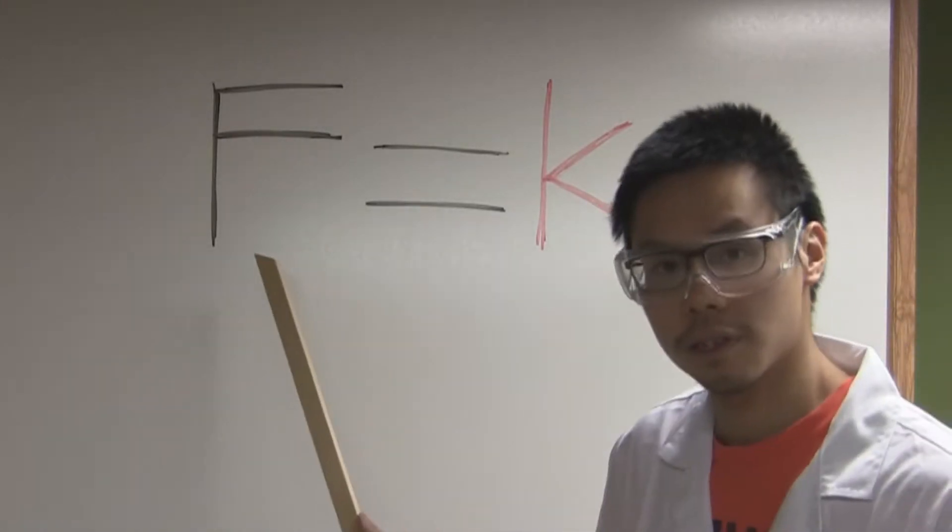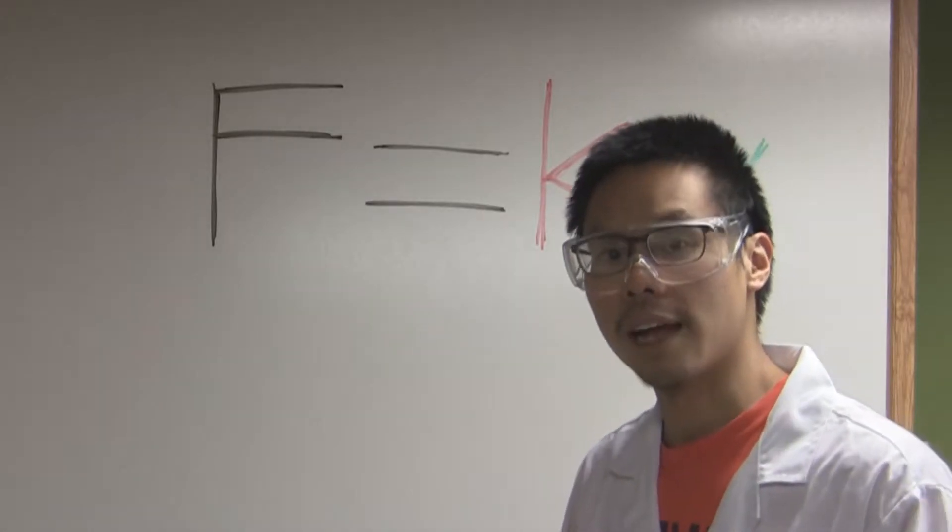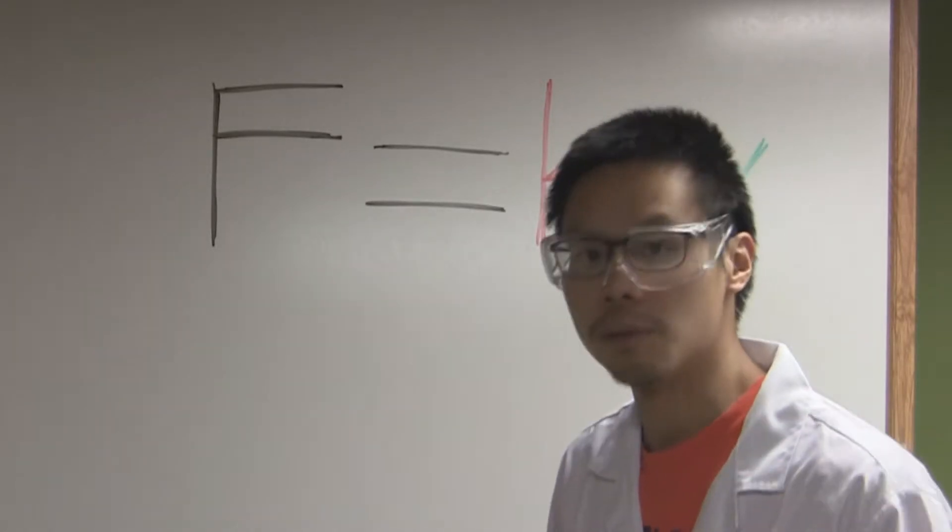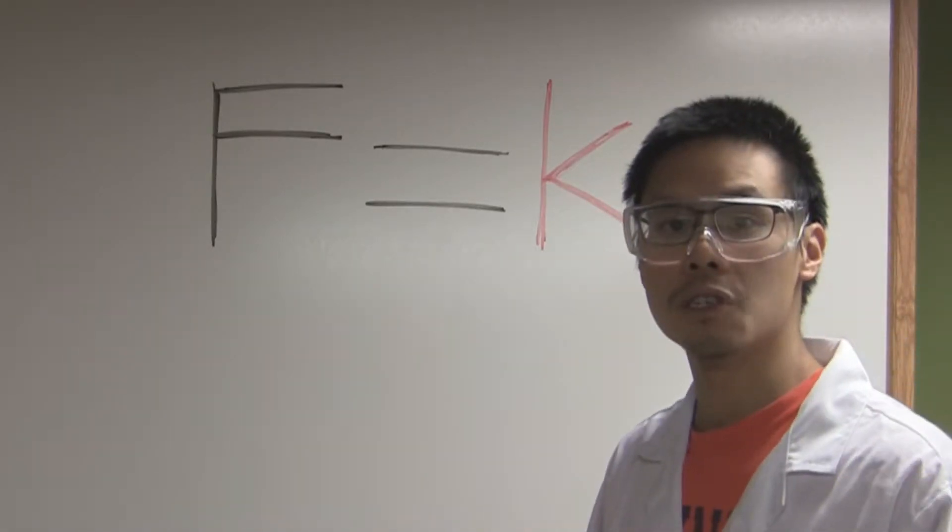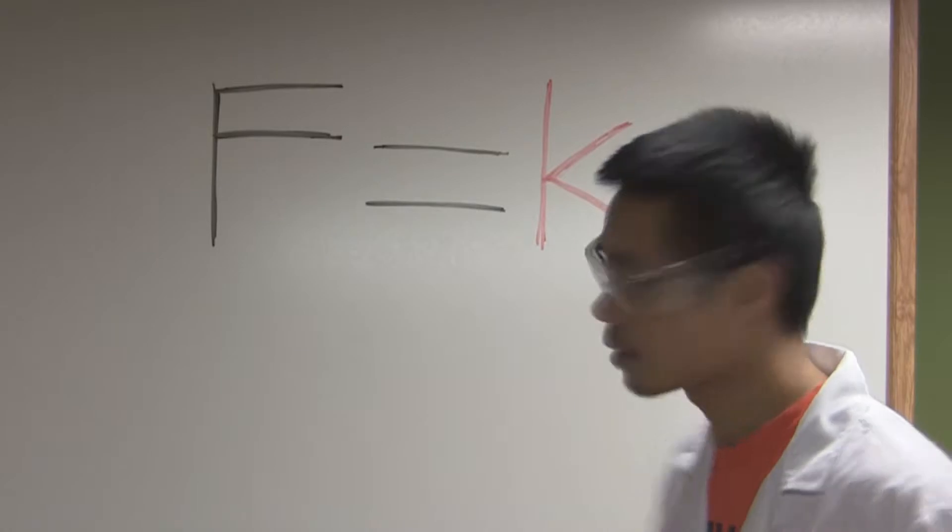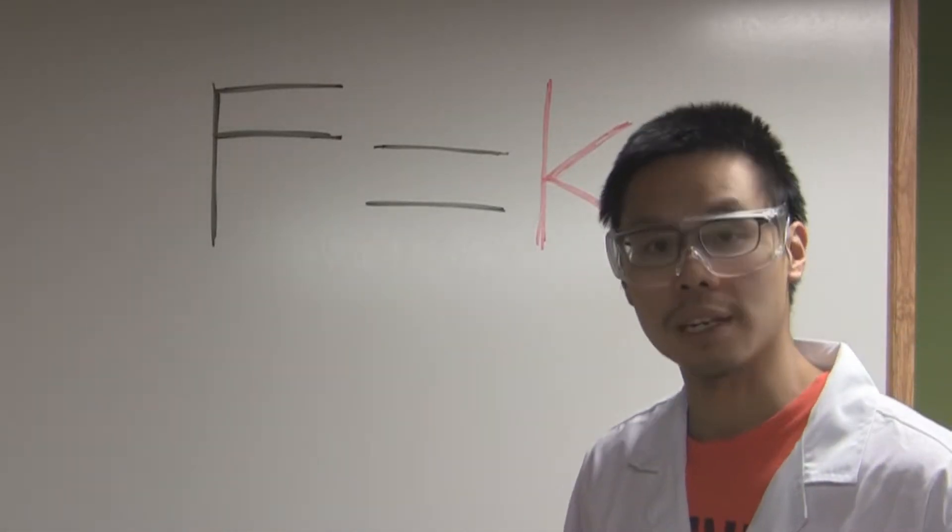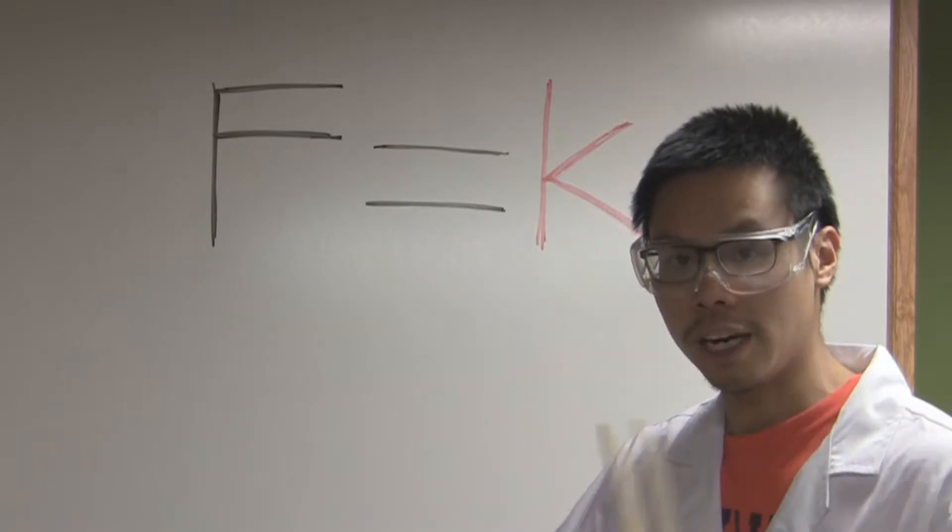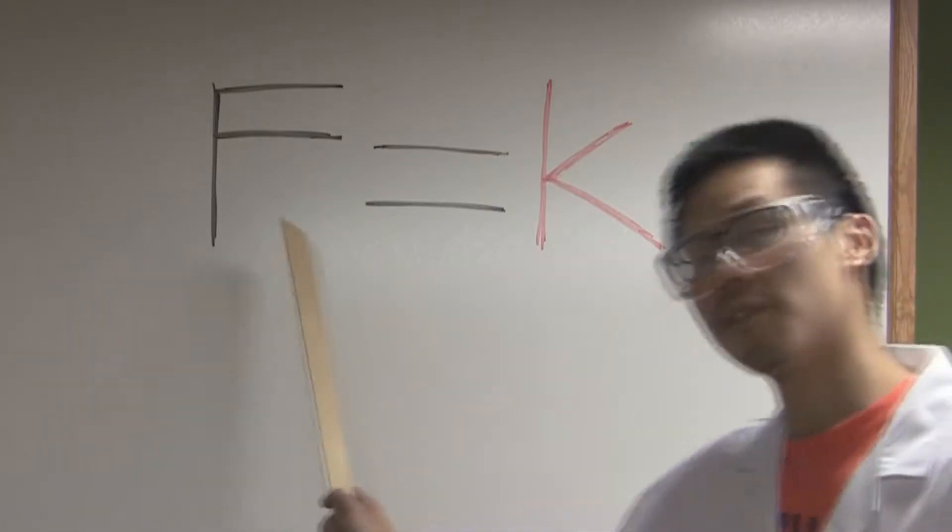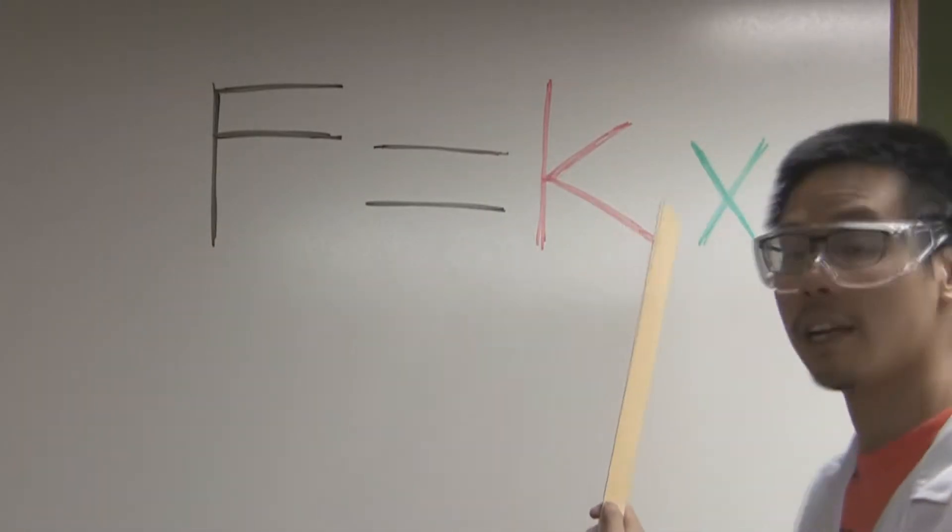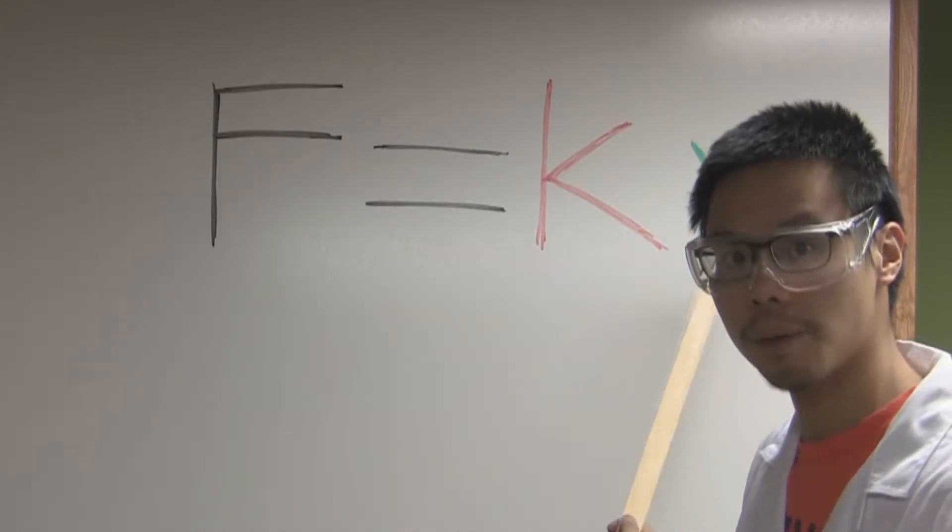F stands for force or the amount of power that is put into the dart. K is the amount of strength a spring has. And X is the amount a spring is compressed or changed from its original position. So as you can see, to increase the force we either have a stronger spring or we can press the spring a bit more.